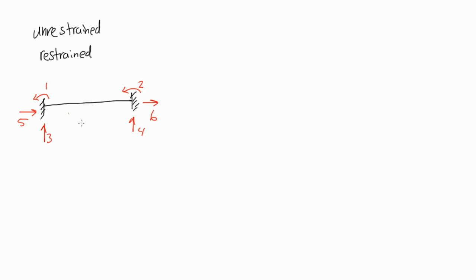Even though this has 6 degrees of freedom, at both ends of this beam, 3 things can happen: the support can rotate, it can move upward, or it can move horizontally. But since these are fixed ends, fixed ends support moment, vertical reactions, and horizontal reactions. So degrees 1, 3, and 5 are restrained because they can't move. And on the right side, degrees 2, 4, and 6 are also all restrained. All 6 degrees of freedom on this beam are restrained degrees of freedom.